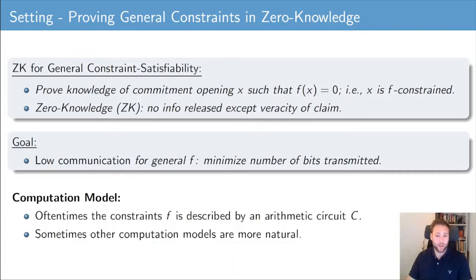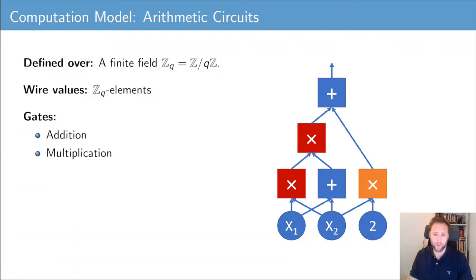Typically, these constraints f are captured or expressed by an arithmetic circuit, hence the computation model is the arithmetic circuit model. However, sometimes another circuit model is more natural. Arithmetic circuits are defined over a finite field, meaning all input values, output values, and intermediate values are finite field elements. The elementary operations and gates are either addition or multiplication gates. Arithmetic circuits capture a very broad class of functions, since every computable function can be expressed as an arithmetic circuit.